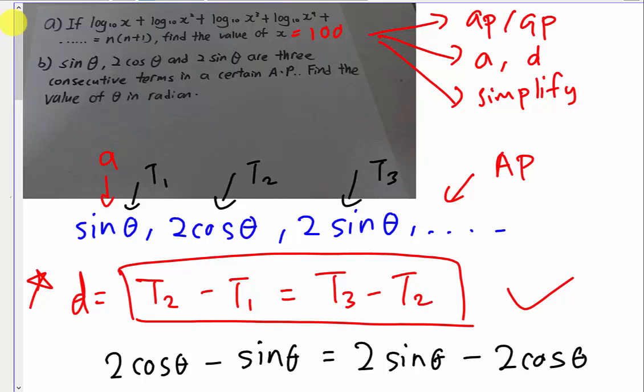For Part B, it's not really hard once you get the idea. A lot of students feel panic or worried when they see sine, cosine, and tangent inside a progression question. But the idea is still the same — just use whatever information you have to solve the question. I hope after watching this video you can redo the question yourself to see how much you understand. Thanks for watching, and please subscribe if you found this helpful.